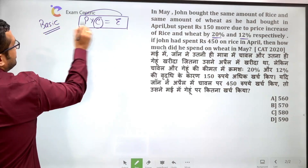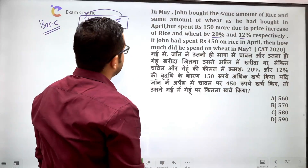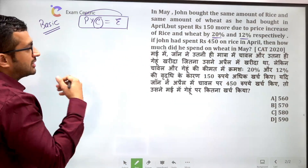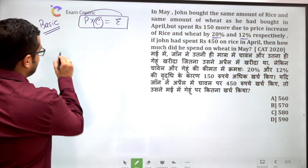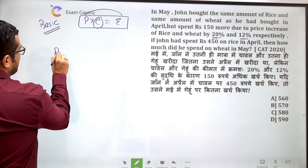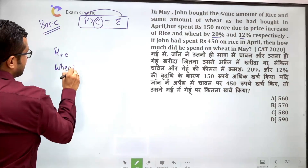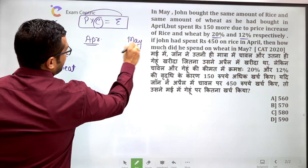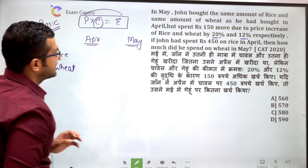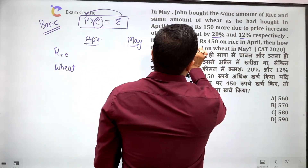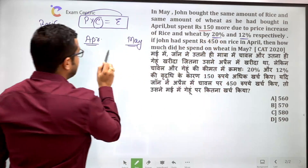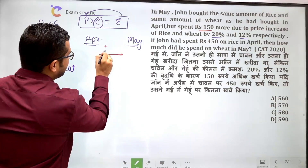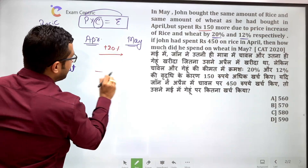तो हम basic method से इस सवाल को करते हैं। यह relation clearly समझना ज़रूरी है: जितना price में increase होगा उतना ही percent change expenditure में होगा। Total जो change हुआ है — दोनों का combined — वो ₹150 का है। Rice में 20% increase हुआ और wheat में 12% increase हुआ।